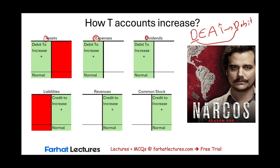If you want to increase liabilities, you credit liabilities. If you want to increase revenues, you credit revenues. To decrease liabilities, you debit them — once you know which side an account increases on, you know the other side is for decreasing. Common stock increases on the credit side. You are not going to reduce common stock in most situations, and revenues rarely get reduced — we'll cover that later. So LRC — liabilities, revenues, common stock — they increase on the credit. DEA accounts increase on the debit. That's how T-accounts work.